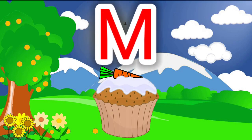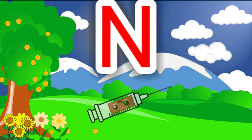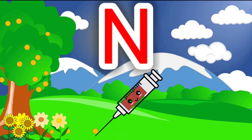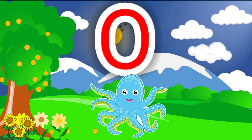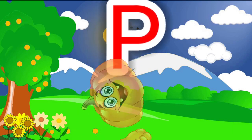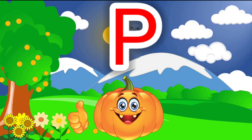M is for Muffin. N is for Needle. O is for Octopus. P is for Pumpkin.